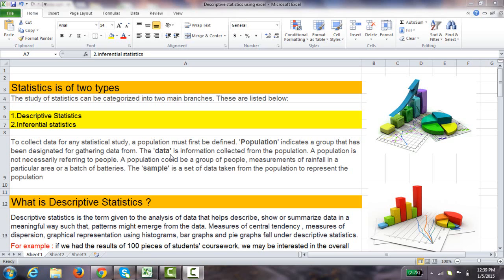What is data? The data is information collected from the population. A population is not necessarily referring to people. A population could be a group of people, measurements of rainfall in a particular area, or even a batch of batteries.